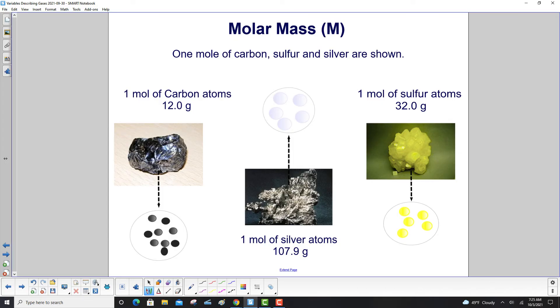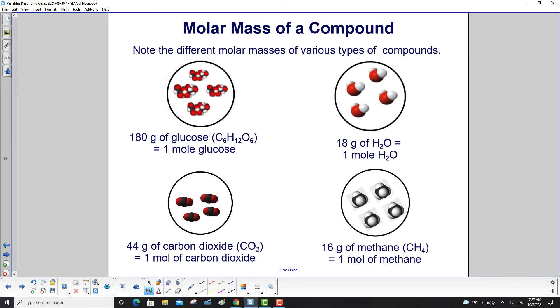Here's what a mole of carbon, sulfur, and silver look like. One mole of carbon atoms is 12 grams of carbon atoms. One mole of silver is 107.9 grams, and one mole of sulfur atoms is 32.0 grams. We also have molar masses for compounds.